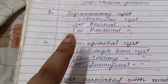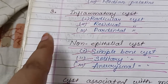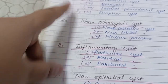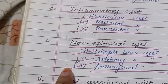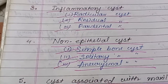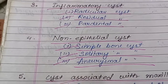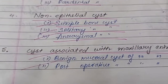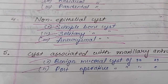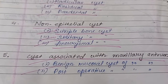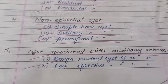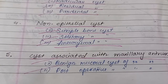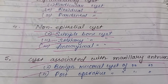Now, coming to non-epithelial cysts — cysts of the jaw are divided into epithelial and non-epithelial, and all the above were epithelial. Non-epithelial cysts include simple bone cysts, solitary bone cysts, and aneurysmal bone cysts. Cysts associated with the maxillary antrum include lining epithelial cysts of the maxillary antrum and post-operative cysts of the maxillary antrum.